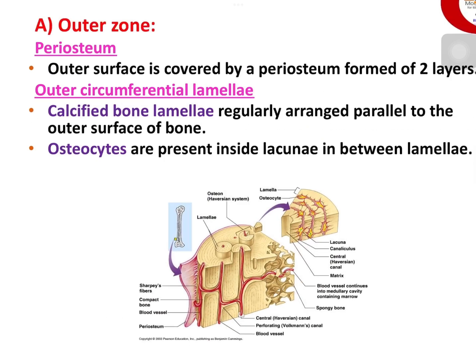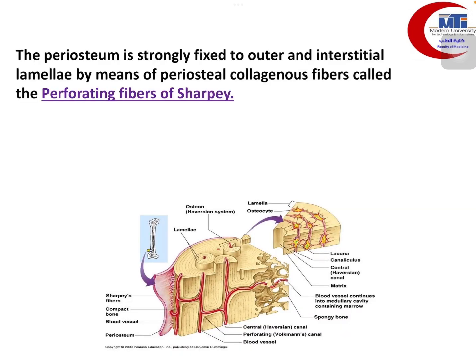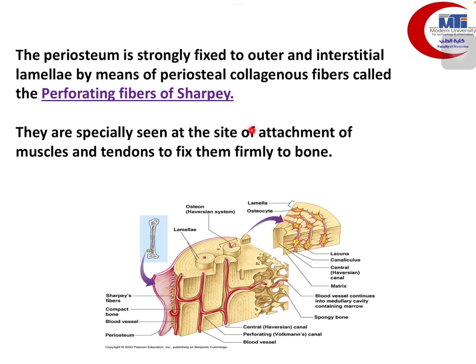This is a light microscopic picture of a section of a long bone. We can see the periosteum covering — it is formed of two layers: the outer fibrous layer and the inner osteogenic layer, containing osteogenic cells and osteoblasts. Beneath the periosteum lies the outer circumferential lamellae, which are parallel layers of calcified bone tissue deep to the periosteal layer. That is the outer zone of the compact bone.